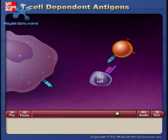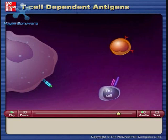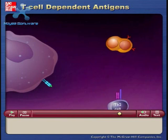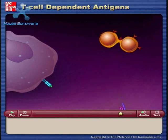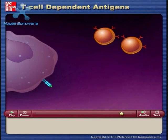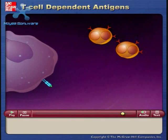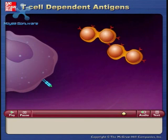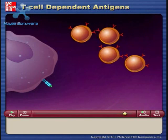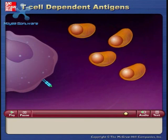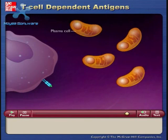The T helper cell produces cytokines, which stimulate the B cell to proliferate and differentiate into antibody-producing plasma cells and memory cells.